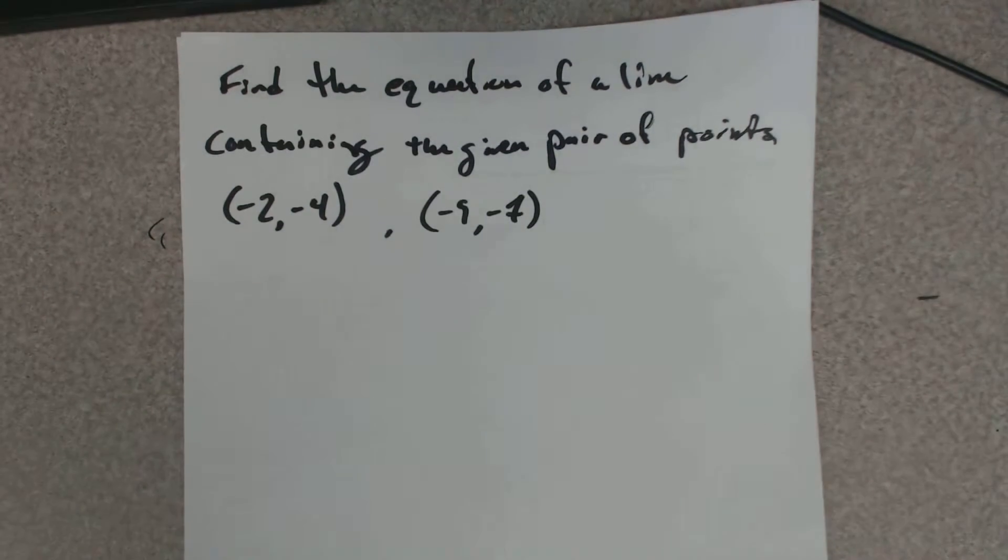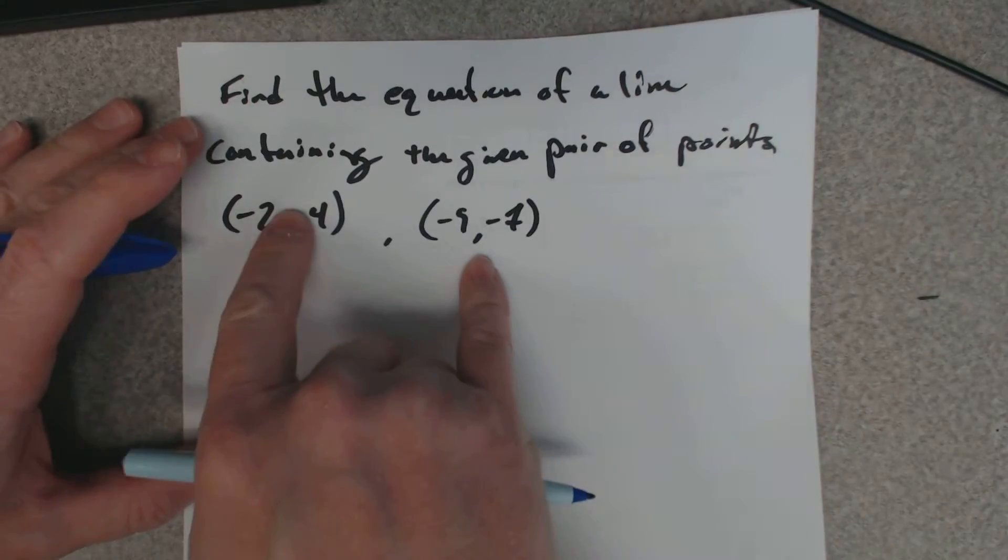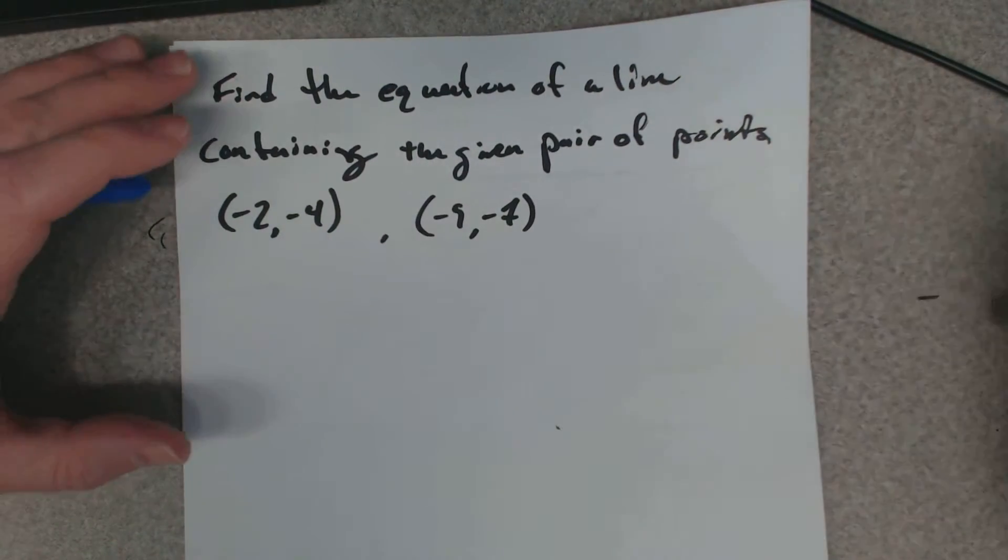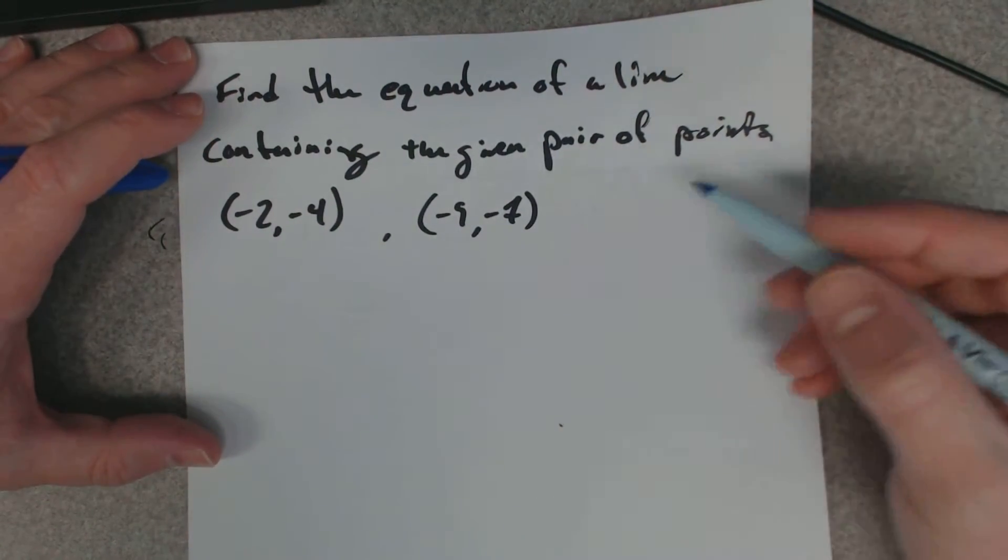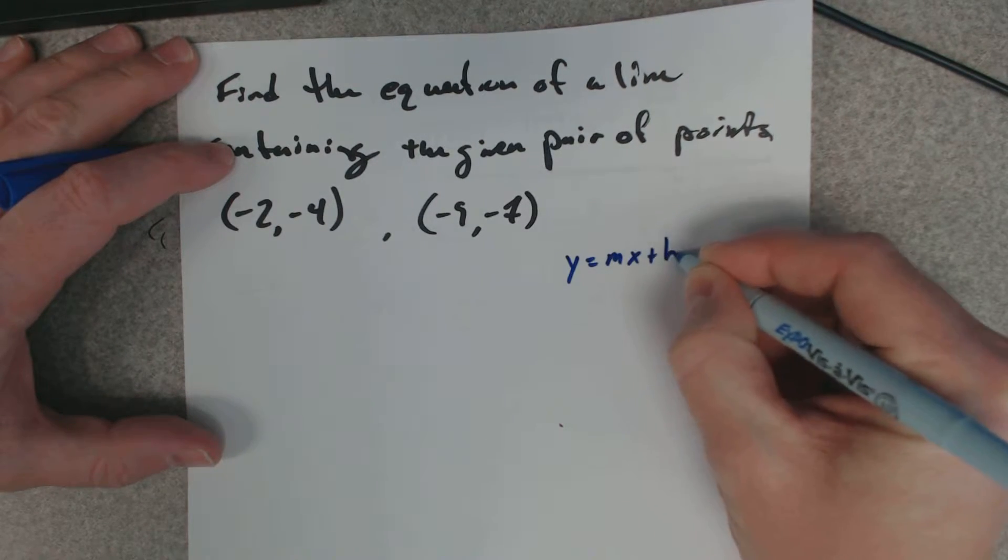Remember that you need two bits of information to describe any line: either two points or the slope and a point. For an equation, we need to end up having this y equals mx plus b.